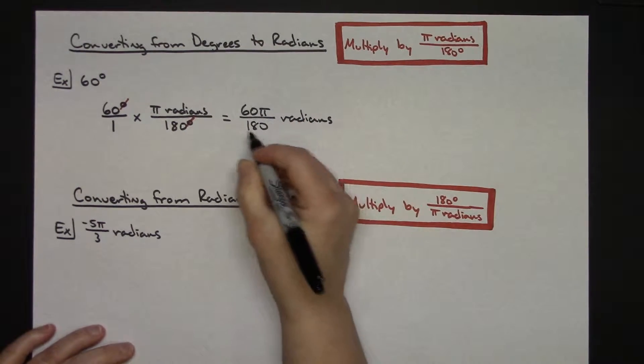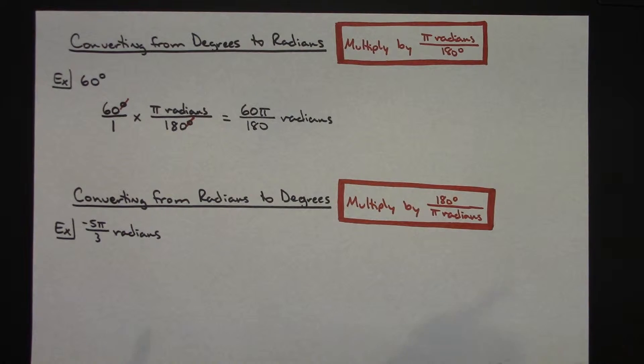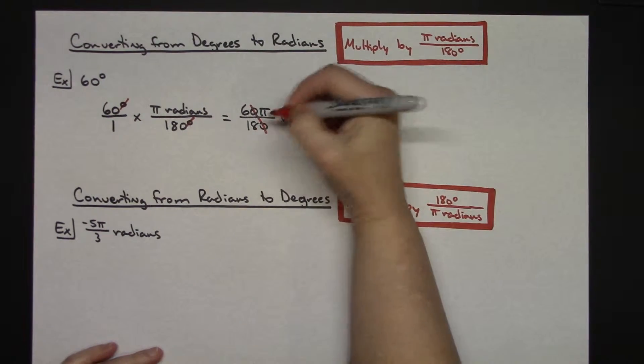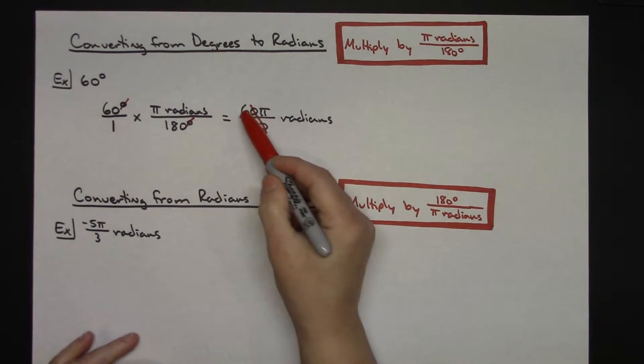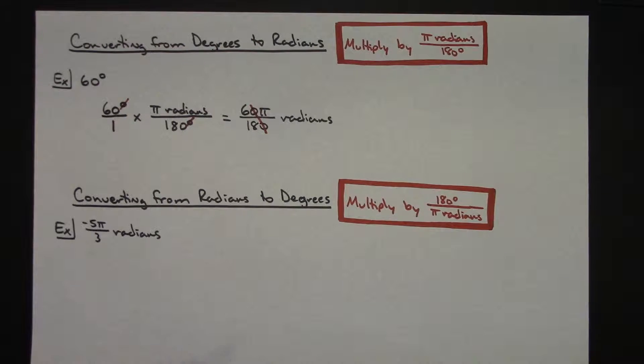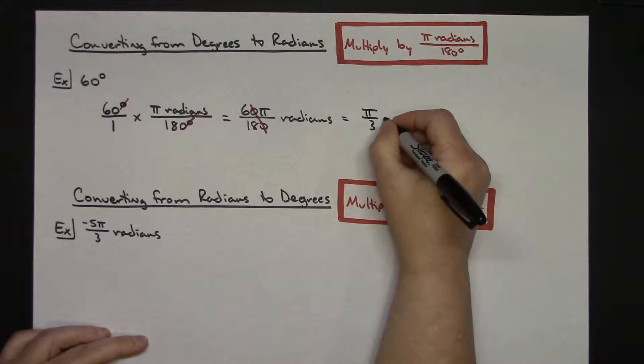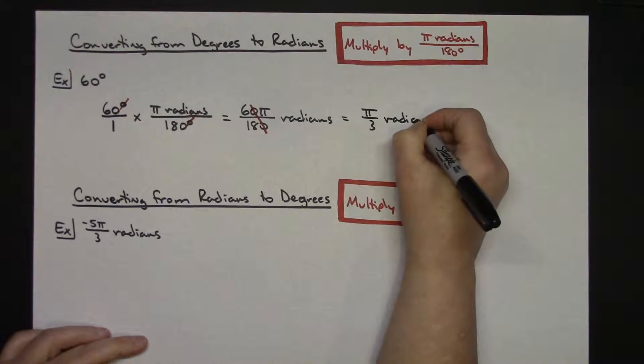Now you are going to probably want to take care of that fraction, so you can more easily find it on the unit circle. If you can reduce that fraction, then by all means do. In this case I can cross off zeros, and then I've got 6 over 18, which again reduces a little bit farther there, down to π over 3. So 60 degrees is π over 3 radians.